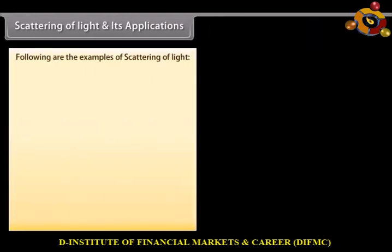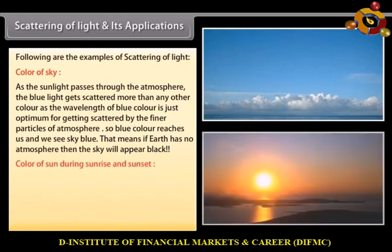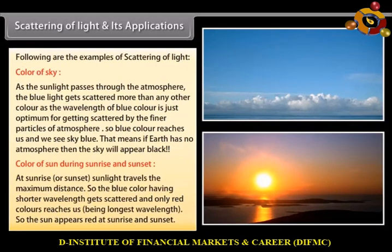Following are examples of scattering of light. As sunlight passes through the atmosphere, the blue light gets scattered more than any other color, as the wavelength of blue color is just optimum for getting scattered by the finer particles of the atmosphere. So blue color reaches us and we see the sky as blue. If the Earth had no atmosphere, the sky would appear black. Color of sun during sunrise and sunset — at sunrise or sunset, sunlight travels the maximum distance, so the blue color having shorter wavelength gets scattered and only red color, being of the longest wavelength, reaches us. So the sun appears red at sunrise and sunset.